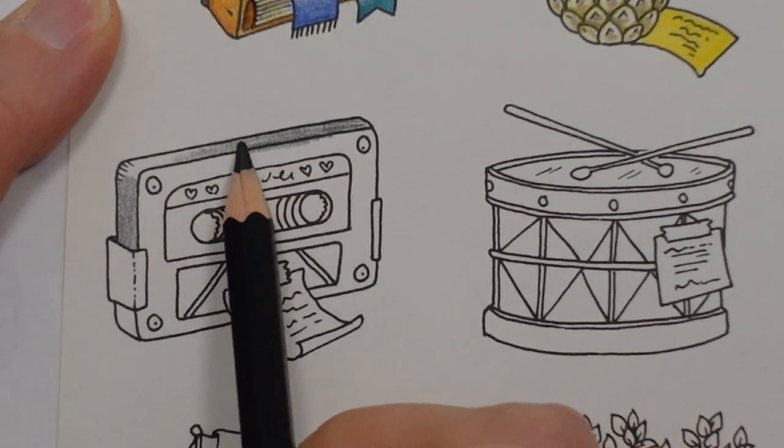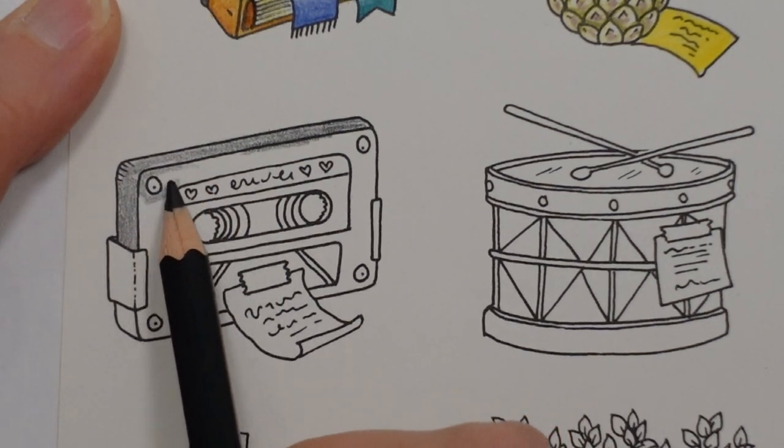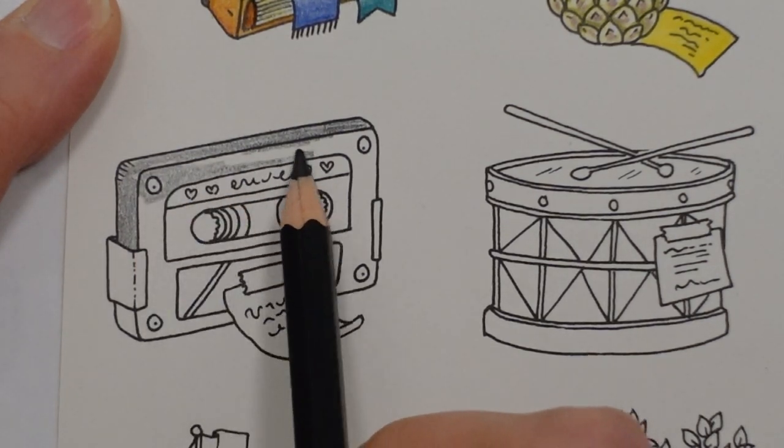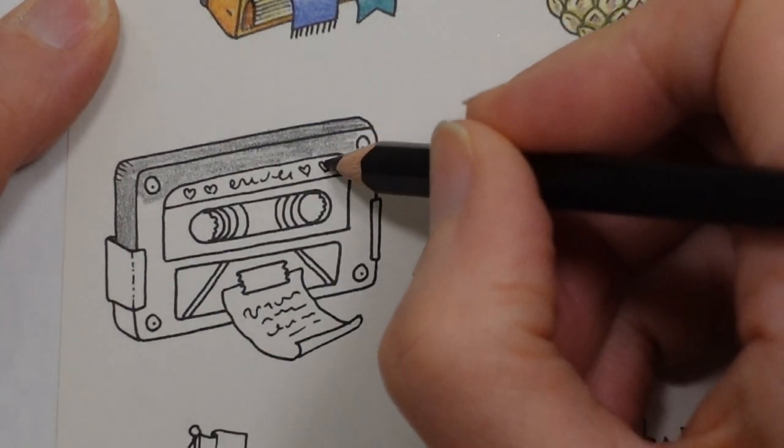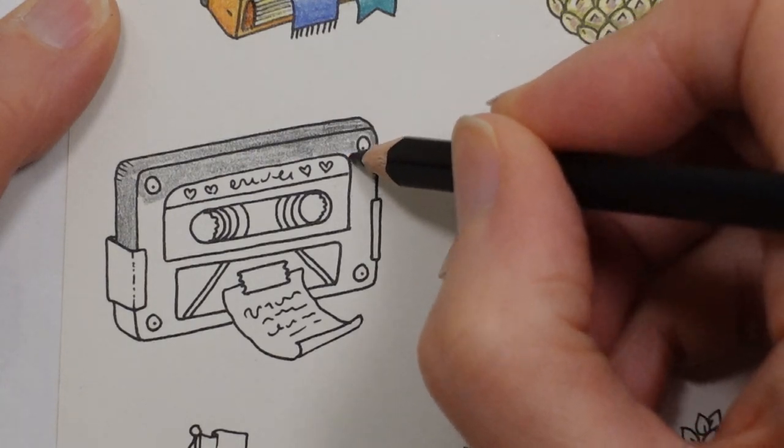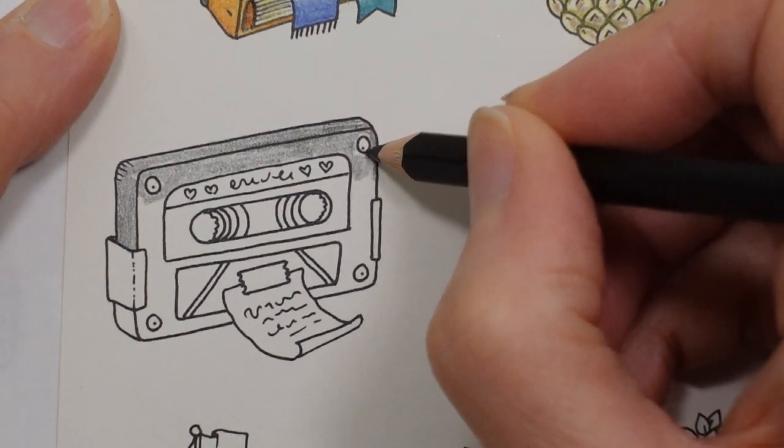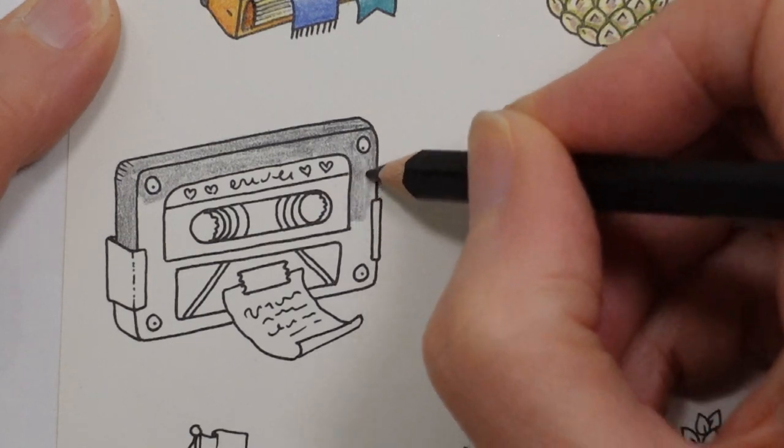Now I think that this is a mix tape. What people used to do was they would make a little mix tape for their partner or for their girlfriend or boyfriend because there are hearts drawn on here. This is the label so I'm thinking has a boy made a mix tape for his girlfriend or something like that.